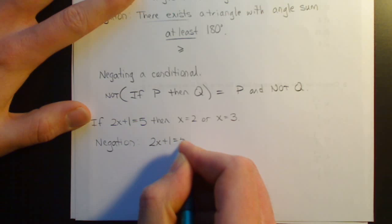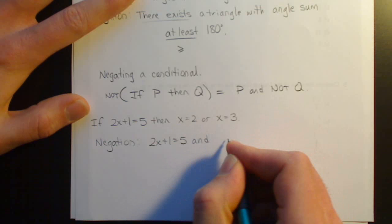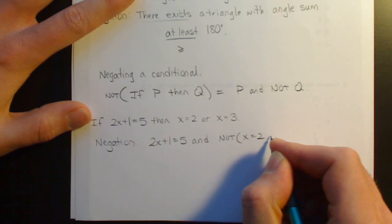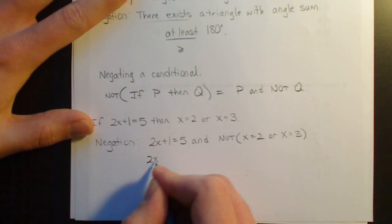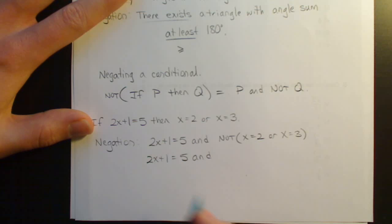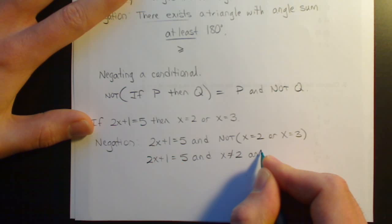2x plus 1 equals 5, and negation of x equals 2 or x equals 3, which is by De Morgan's laws. The way you would normally write this statement would be, 2x plus 1 equals 5, and x not 2, and x not 3.